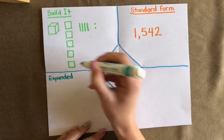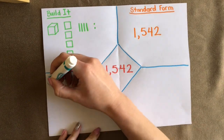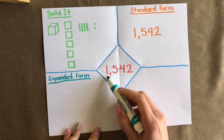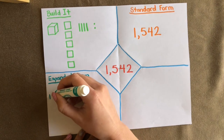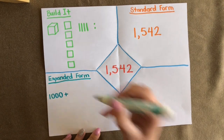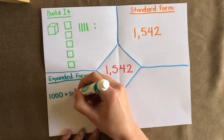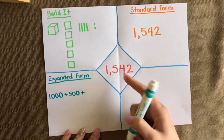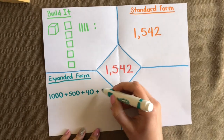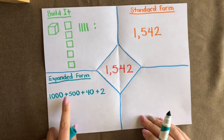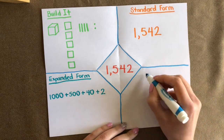For expanded form, pull apart each digit and write the value as an addition equation. This one is not just a one — its value is one thousand. The five is not just a five — it's five hundred. The tens digit four represents forty. And lastly our ones place: two. So expanded form is 1,000 plus 500 plus 40 plus 2.